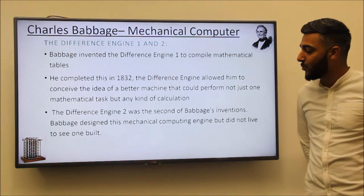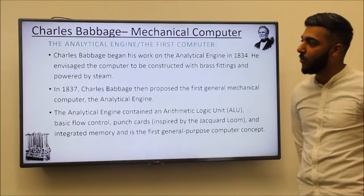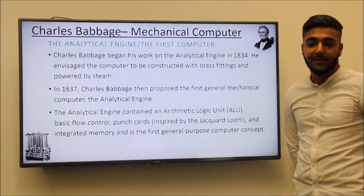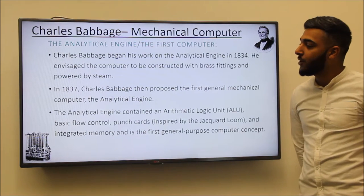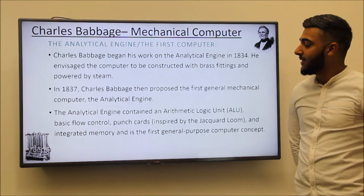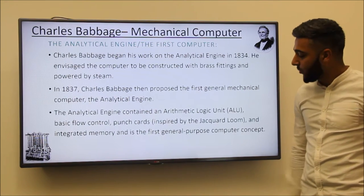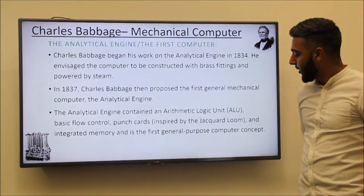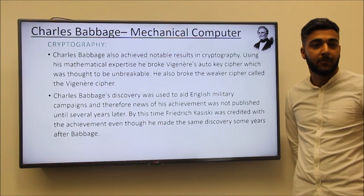The Difference Engine allowed him to conceive the idea of a better machine that could perform not just mathematical tasks but any kind of calculation, so human error was totally removed from the process. He did however design the Difference Engine 2 but unfortunately never lived to see one built. Charles began his work in 1834 on the first computer, also known as the Analytical Engine. He envisioned the computer should be made out of brass fittings and powered by steam.